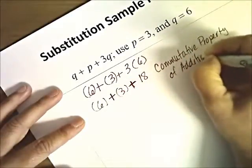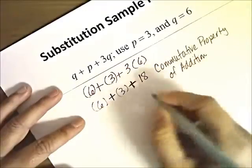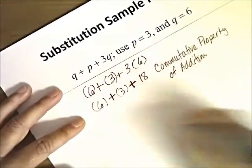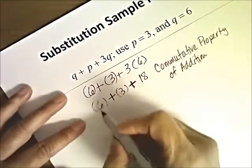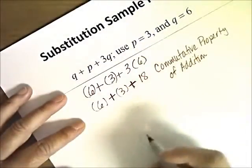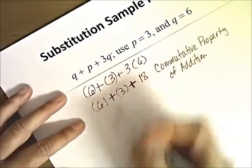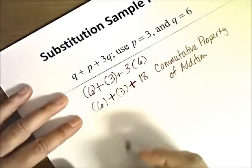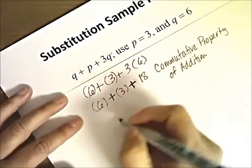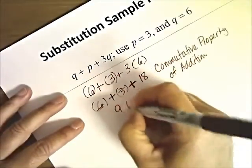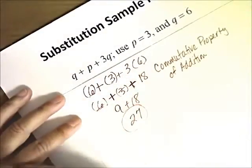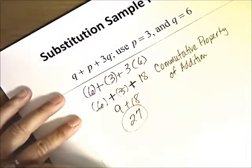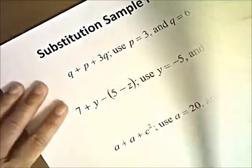Then we just have an addition problem: 6 plus 3 plus 18. Because each of the operations here is addition, we can add straight across or in any order. The reason we can add in any order is the commutative property of addition — you can add any of these numbers in any order and get the same answer. I know that 6 plus 3 is 9, and 9 plus 18 is 27. So that's how we solve that problem.